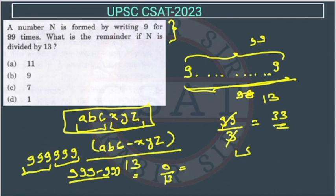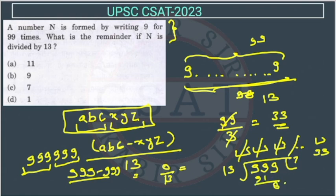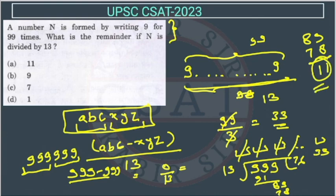We have 33 pairs total. The first pair cancels the second, the second cancels the third, and so on — all pairs cancel up to 32. The last pair, which is 999, remains. Now we divide 999 by 13: 999 divided by 13 gives 76 remainder 11. So the remainder is 11, and the answer is option B.